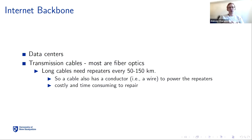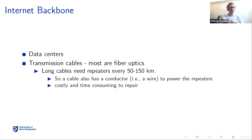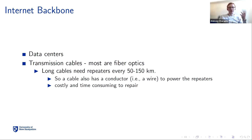However, these long cables — whether under the sea or over long distances on land — need signal repeaters because the signal deteriorates substantially over distance. These repeaters occur about every 50 to 150 kilometers (30 to 90 miles). Each repeater is a device that needs power, so despite the cable being fiber optic, there is actually a conductor wire inside the cable to power these repeaters. That means these cables are again susceptible to interference created by solar storms.